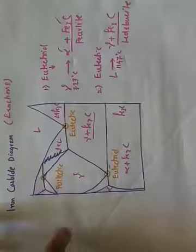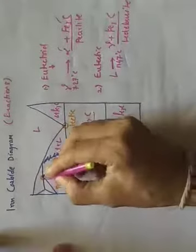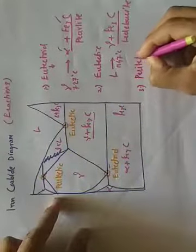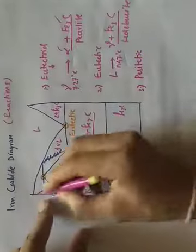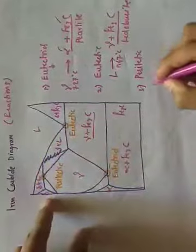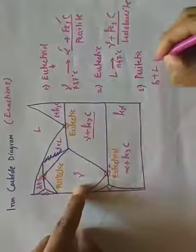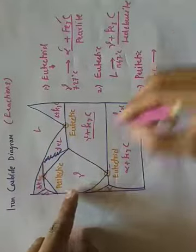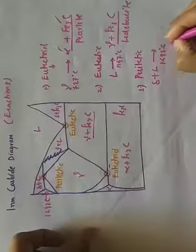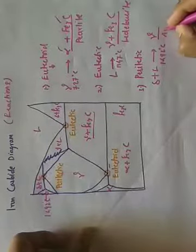The next point is the peritectic point — the third reaction in the iron-carbon diagram. In this region we have delta and delta plus liquid. The peritectic reaction is: delta plus liquid provides austenite (gamma) around 1492°C.